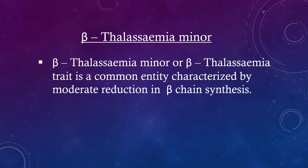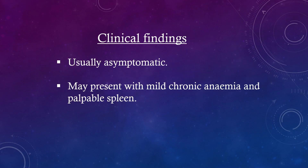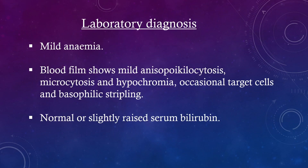Beta-thalassemia minor, or beta-thalassemia trait, is a common entity characterized by moderate reduction in beta chain synthesis. Clinical findings: usually asymptomatic, but may present with mild chronic anemia and palpable spleen.